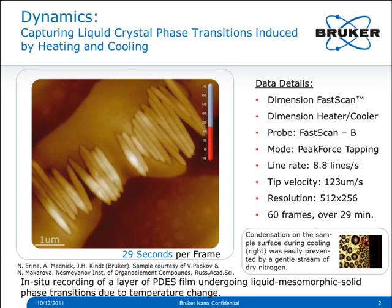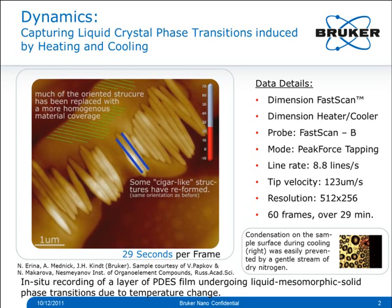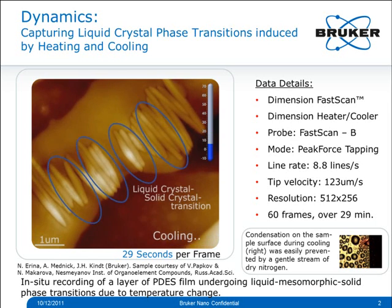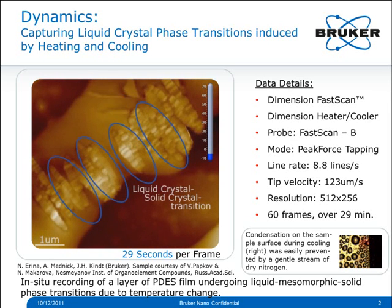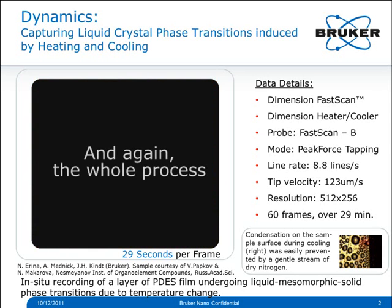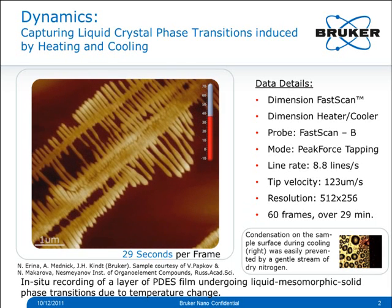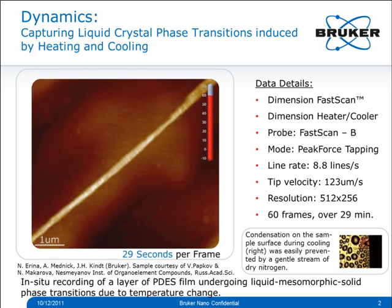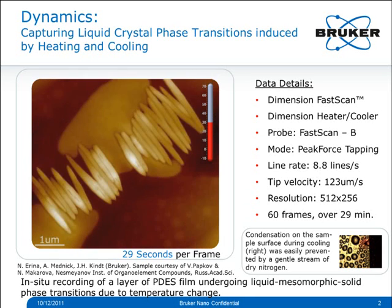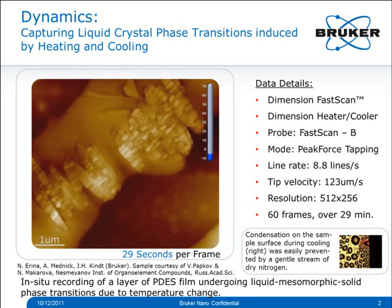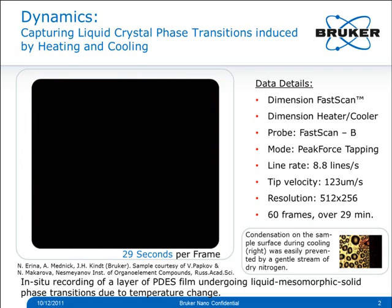Many of the seagull-like structures are reforming in the same orientation while a lot of the material is now non-oriented, as can be seen in the green marked area. Now we are cooling down and the seagull-like structures finally transition into a solid crystal. Let's watch the process again. Here we are heating — the seagull-like structures are melting. There must be some memory in there because the orientation of the seagull-like structures is the same afterwards, and here is the solid crystal.